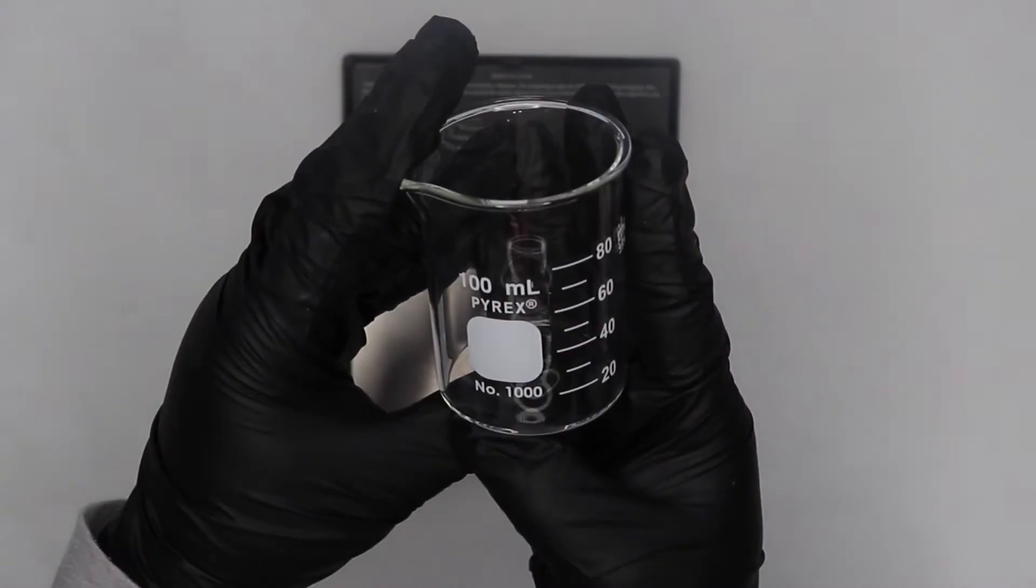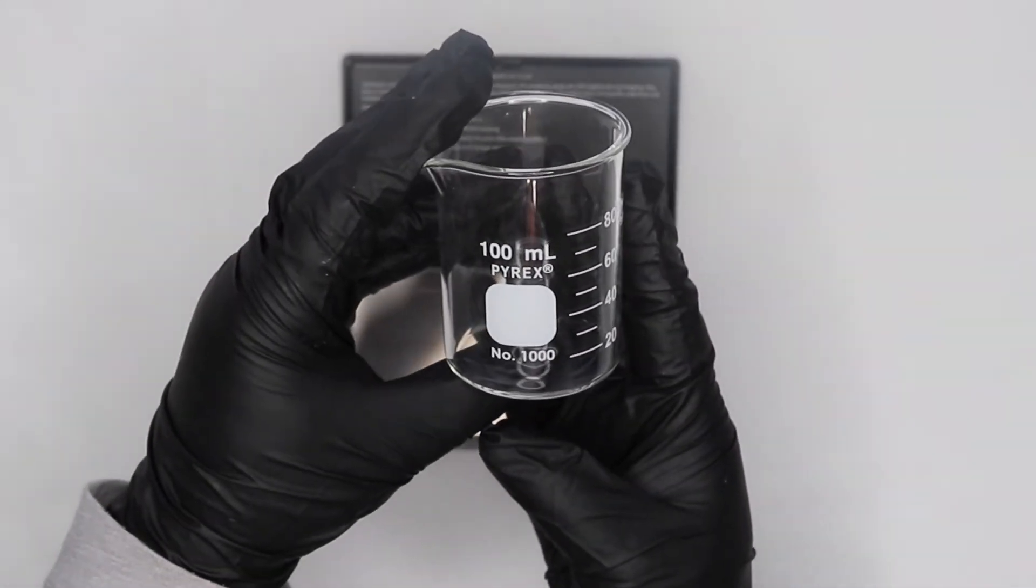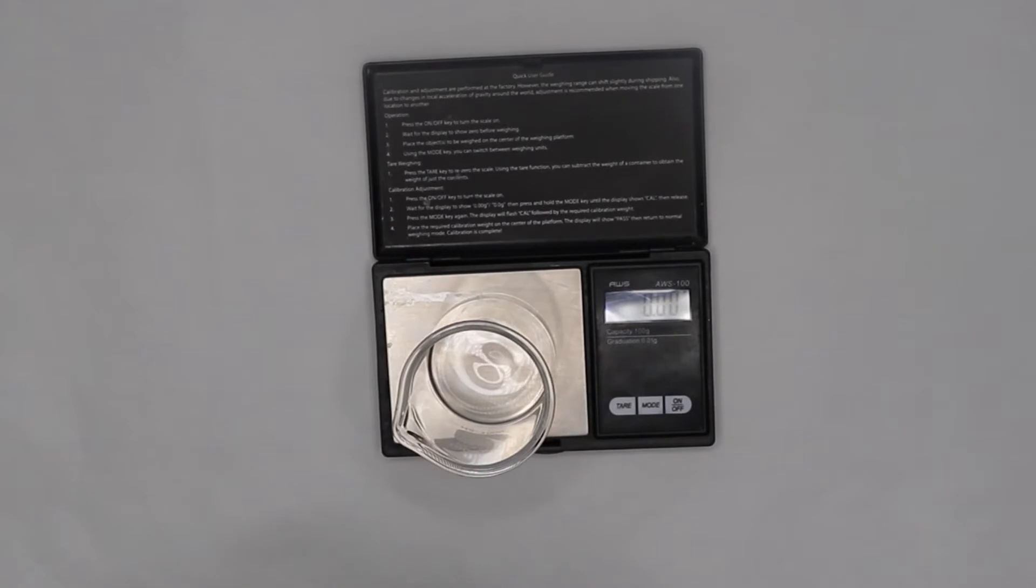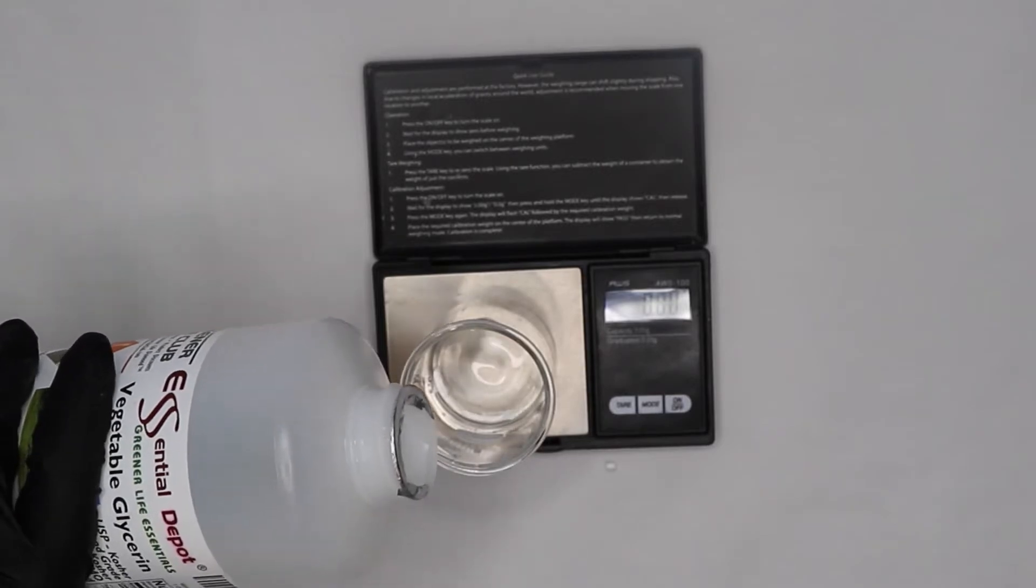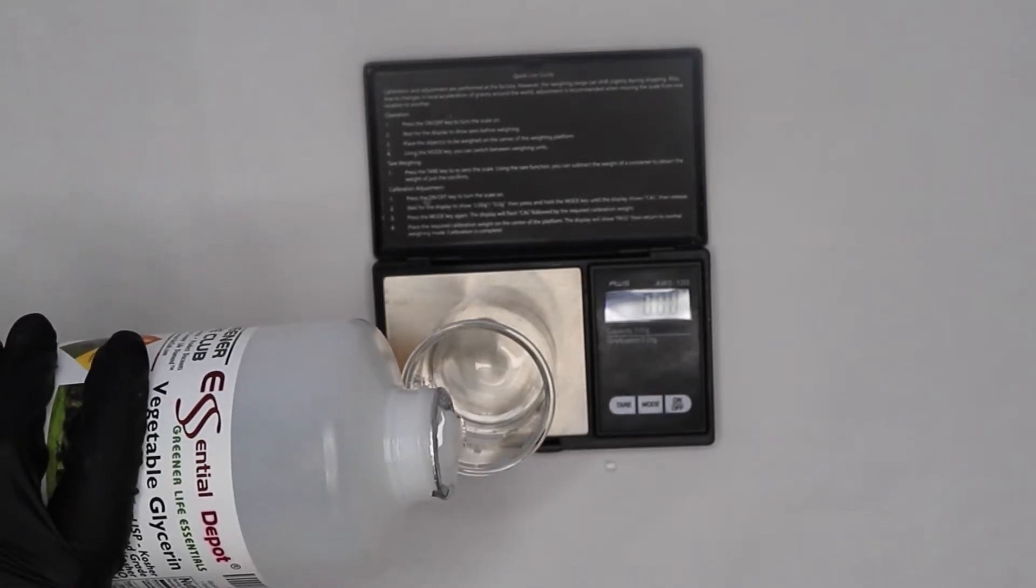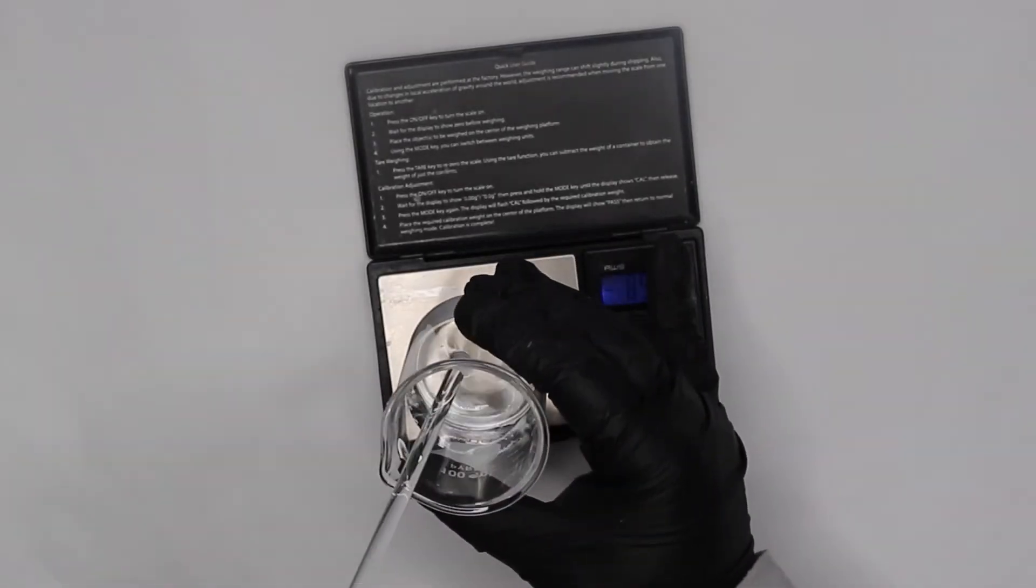Okay for my water phase I'm going to be using a hundred milliliter beaker and here I'm adding 36 grams of distilled water. Three grams of vegetable glycerin and this is all I'm adding to my water phase.